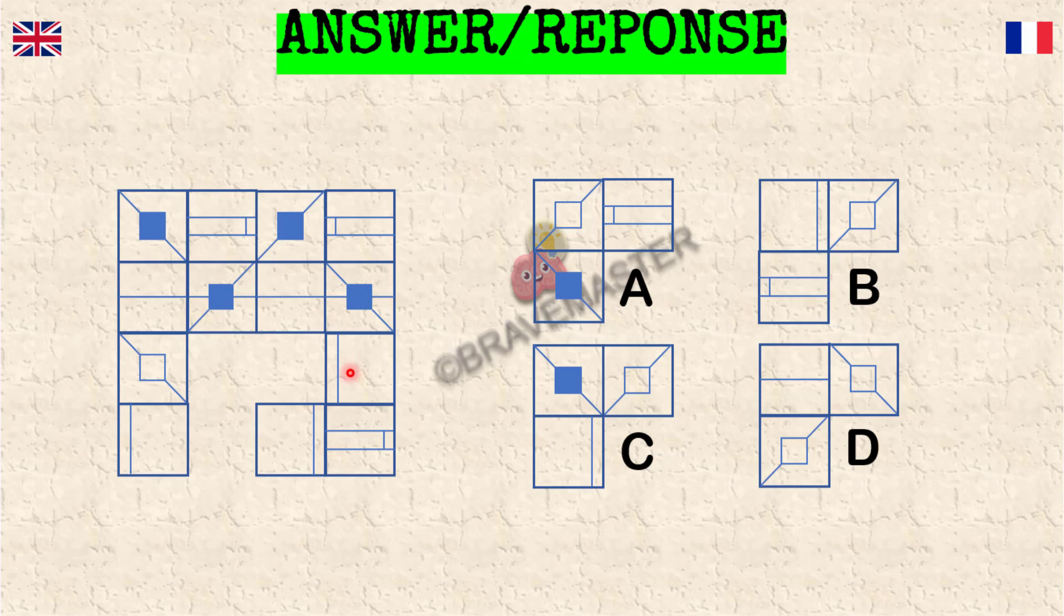That way we can assume that this one will be showing here as a mirrored version here, which then would be here. It's actually the B is the only one already when you look at this one, and then this one is mirrored here, that will come here, and then this one is the mirrored version of this one. So the B is the correct answer in this case.